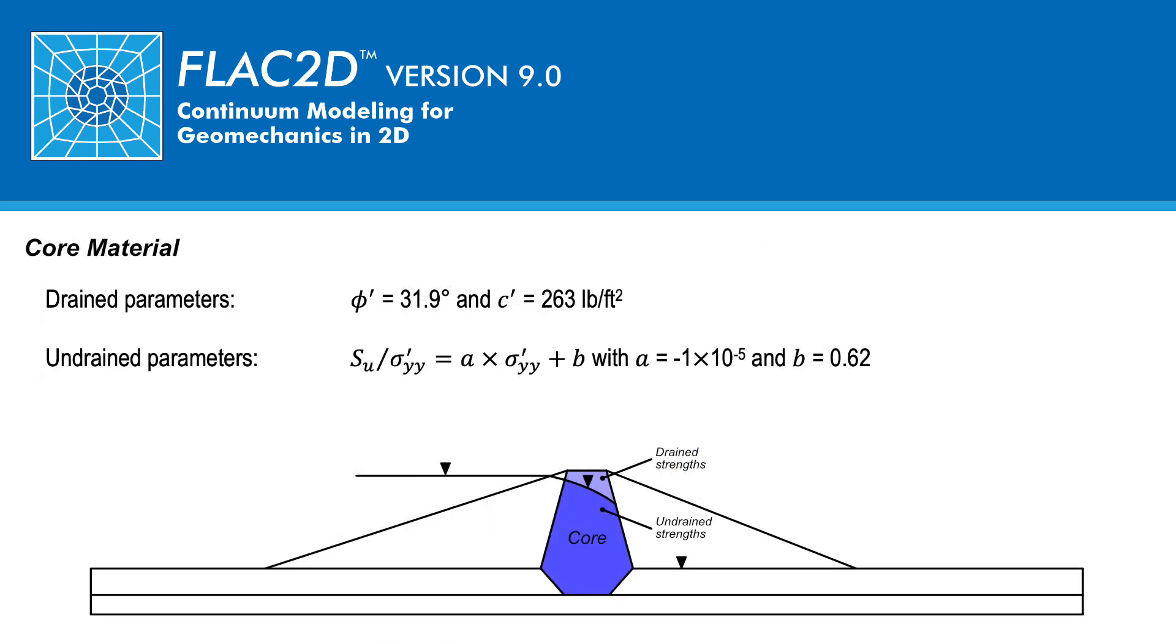During earthquake loading, the core material is modeled to behave drained above the phreatic surface and undrained below the phreatic surface. The drained shear strength is a function of the drained friction angle and cohesion, whereas the undrained shear strength is a function of the undrained shear strength ratio, which is also a function of the vertical effective stress.